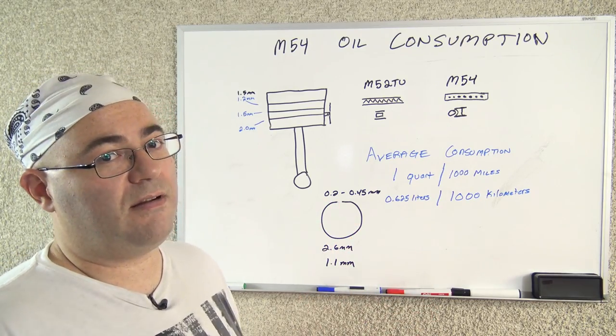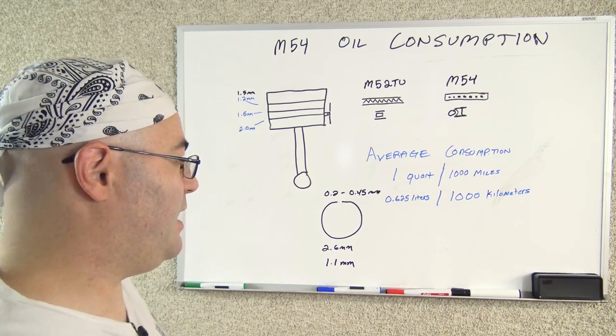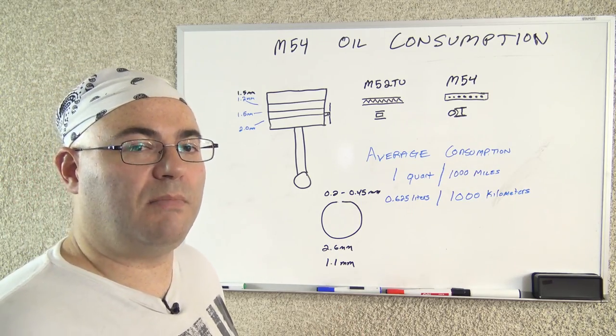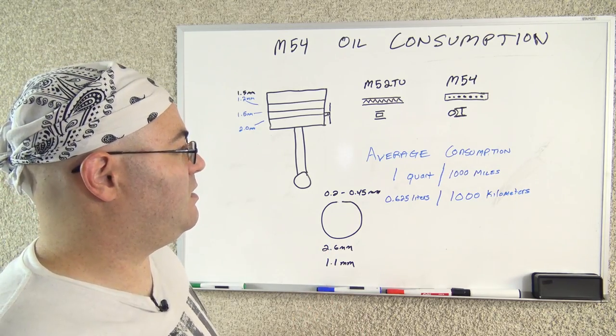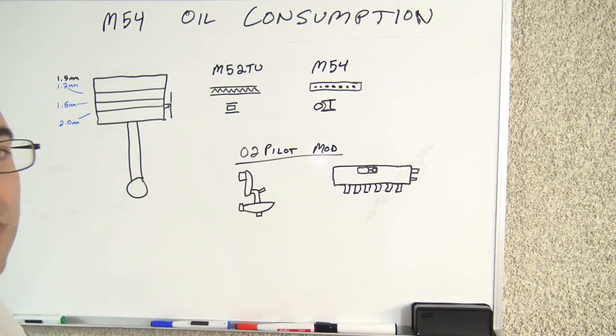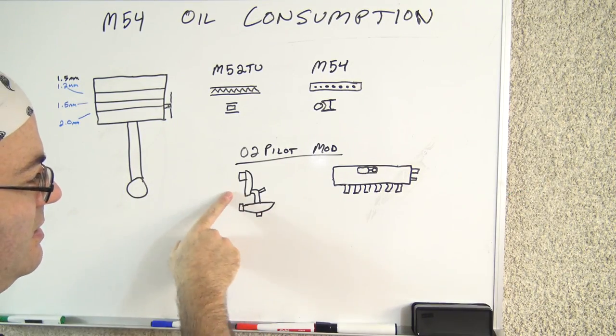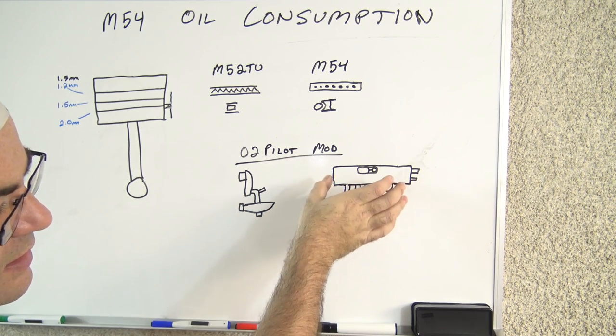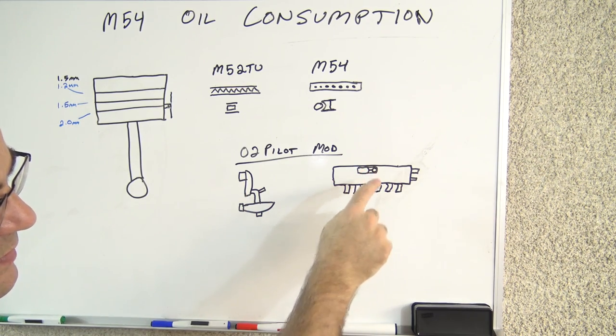So I would highly recommend doing an oil catch can setup if you are so inclined. If you're not, there is a third option and it's known as the O2 pilot mod. I'm going to erase this and I'll show you. So this is what's known as the O2 pilot mod. That is the user who came up with this. This is the oil separator. This is the intake manifold. We're looking at it from the side. This is the DISA valve. Forgive the crudeness of the drawing.